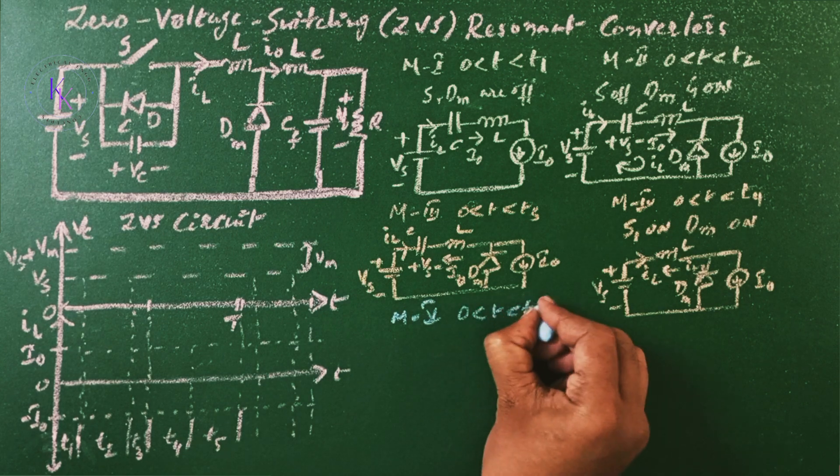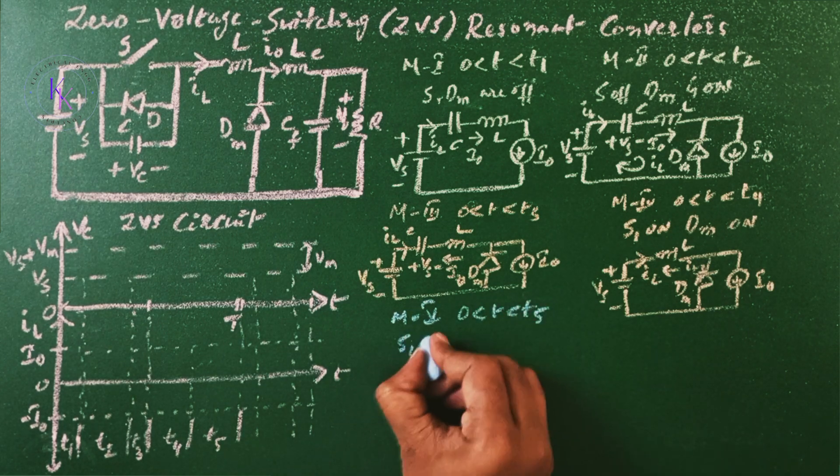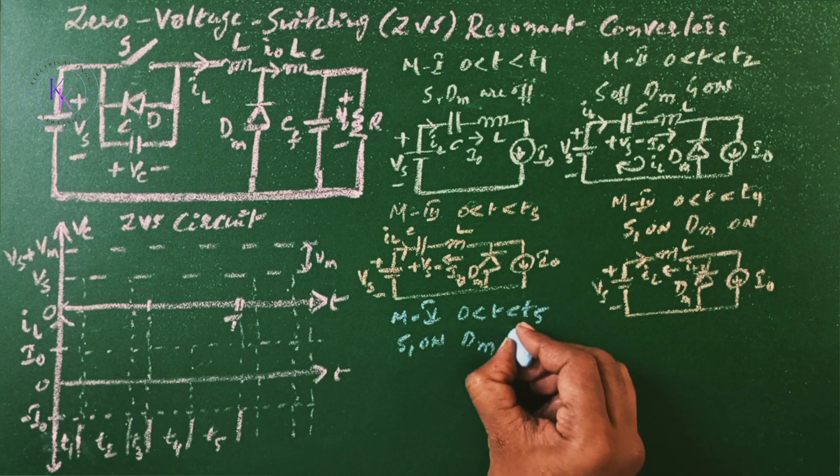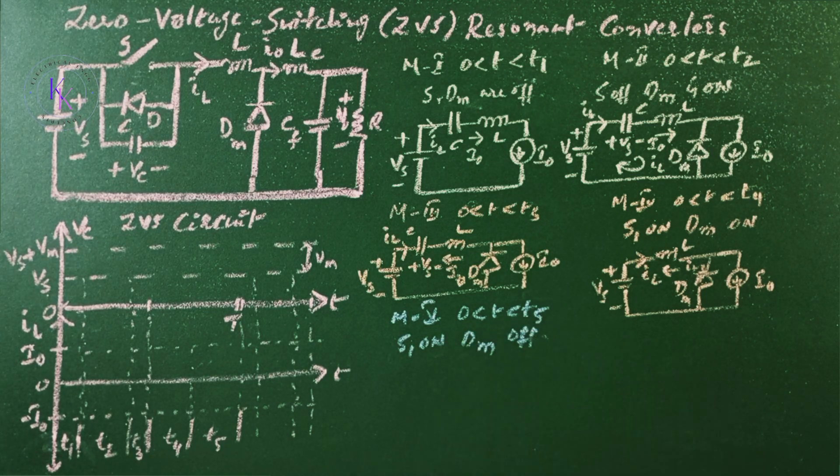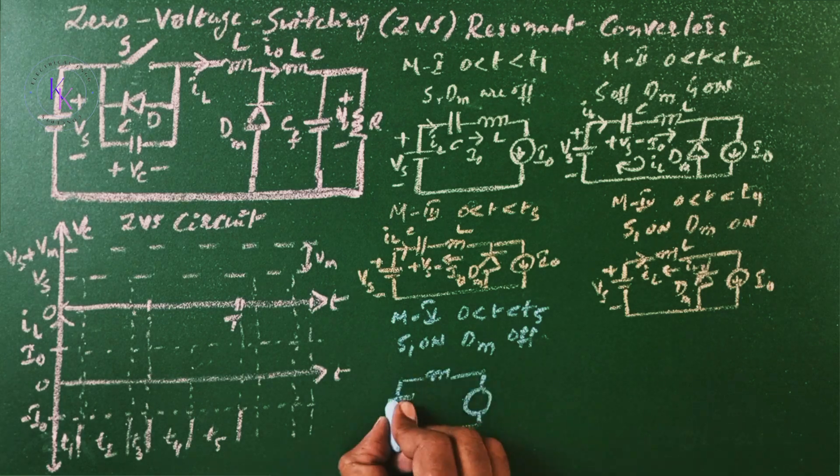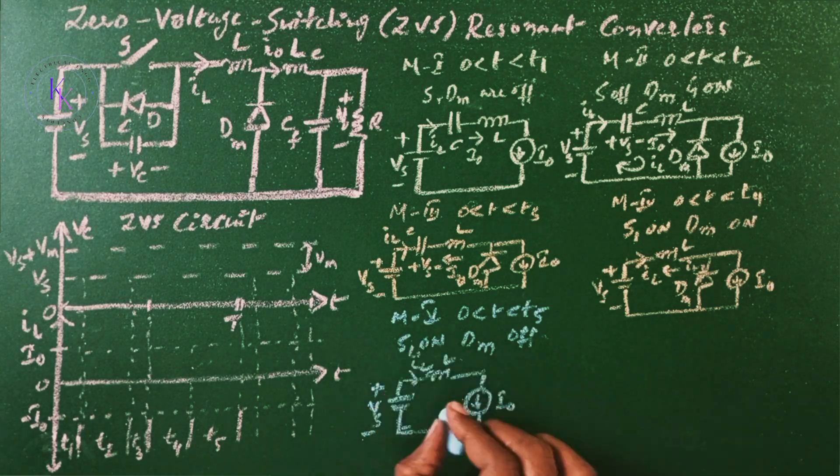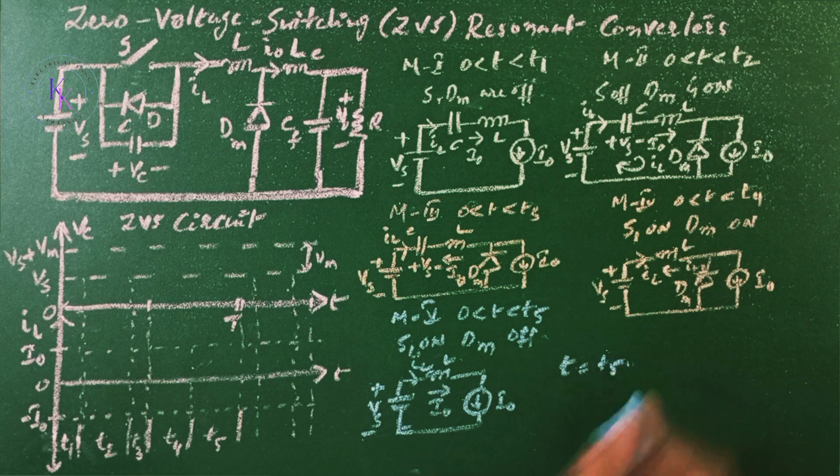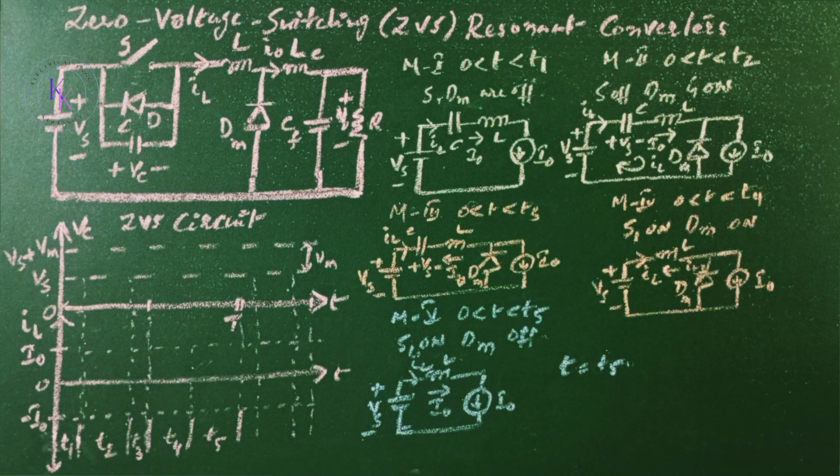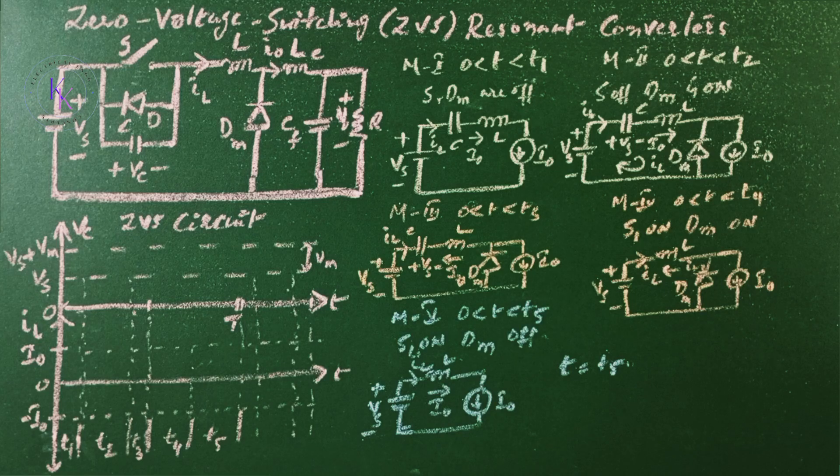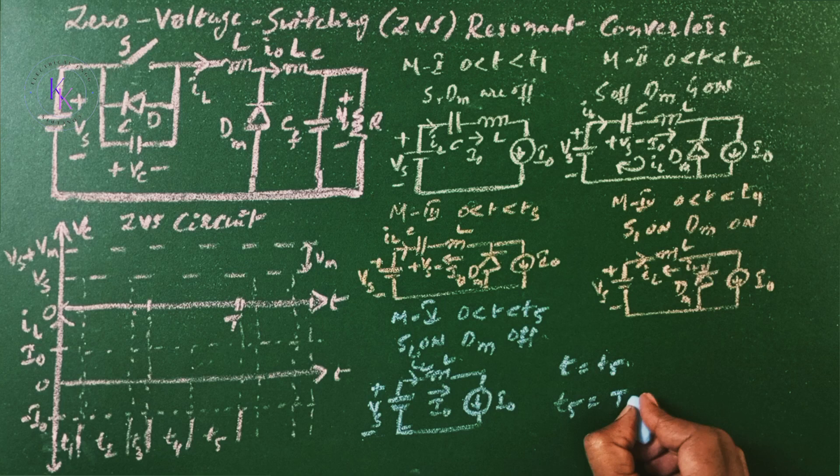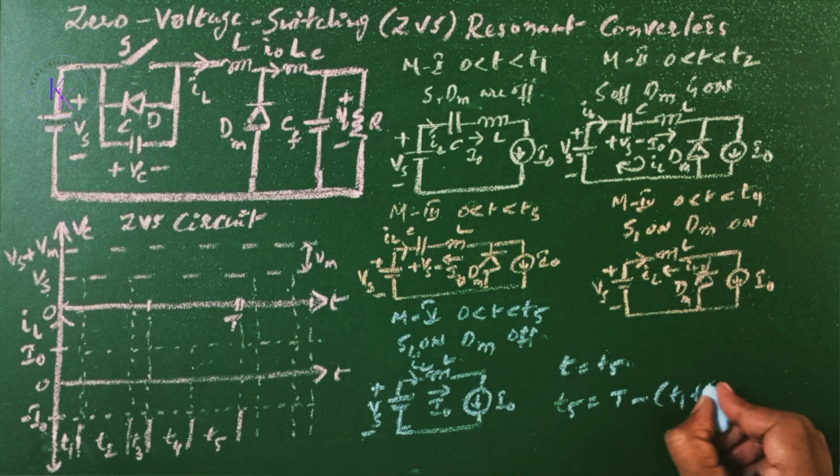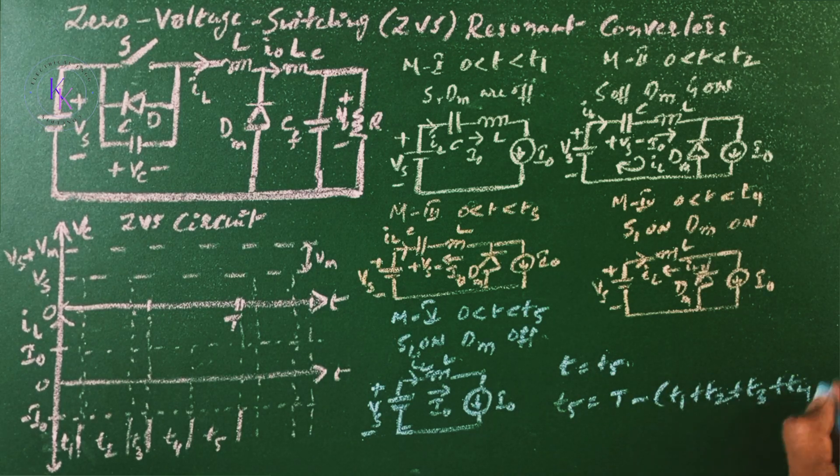Mode 5 is going to lie between zero and T5, where S1 is on, DM is made off. The equivalent circuit will be... and the load current I0 flows through the switch. This mode ends at T equals to T5 where the switch is turned off again and the cycle is repeated. That is, T5 equals to T minus T1 plus T2 plus T3 plus T4.